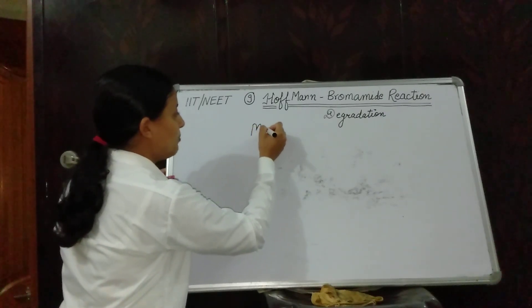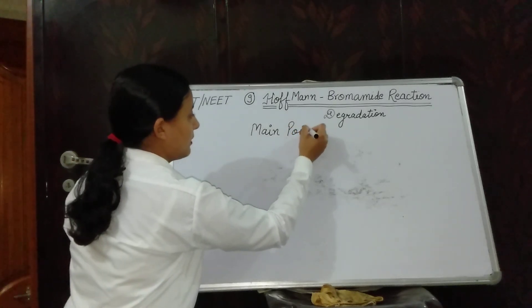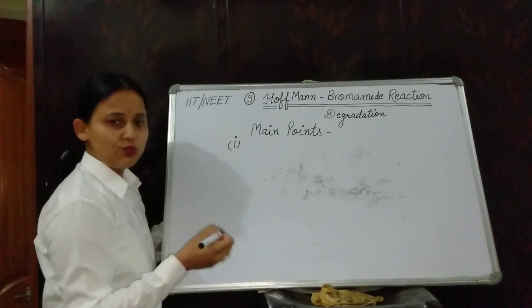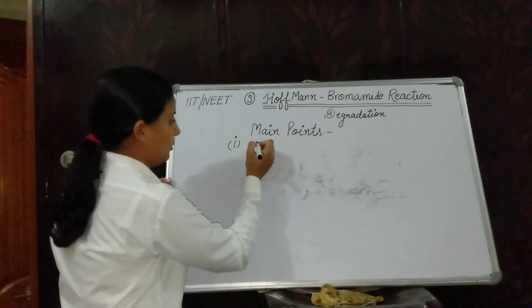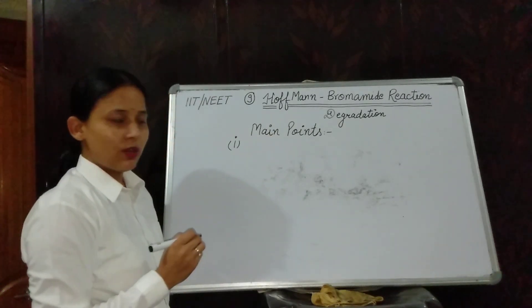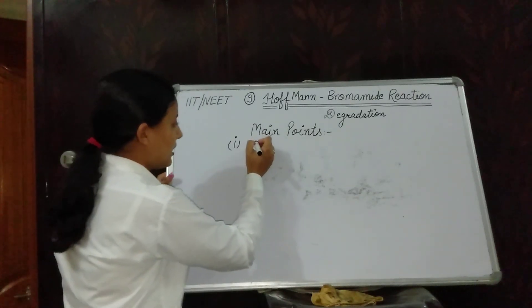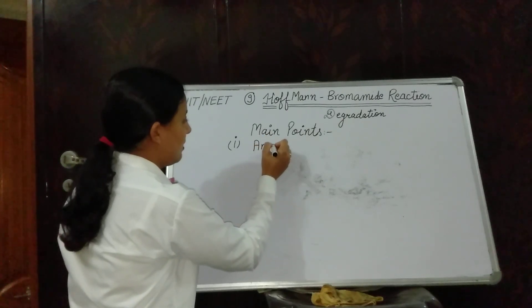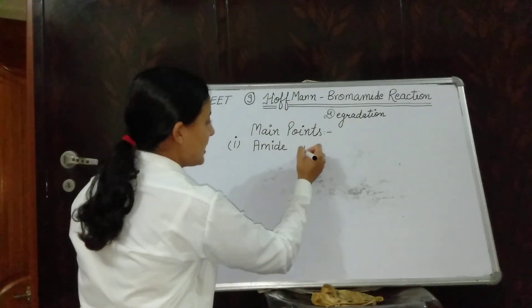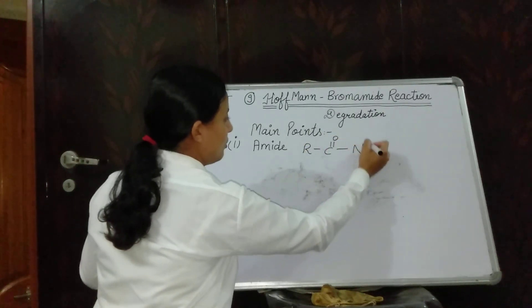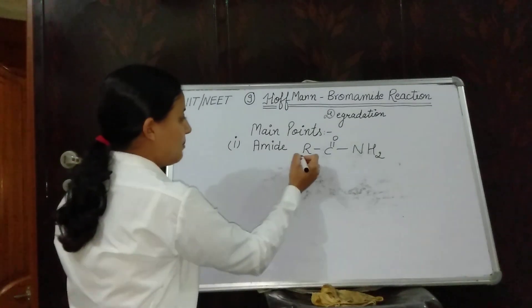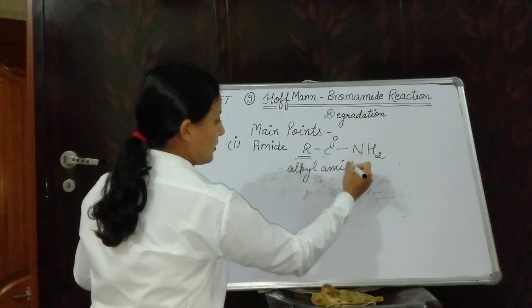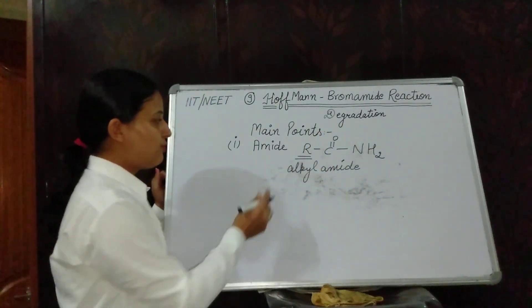First we see the main points of the reaction. In the very first main point, we see what is our reactant molecule. Focus in this reaction on both the reactant molecule and the product molecule. The reactant molecule in this reaction will be Amide — you can write this as R-CO-NH₂, that is alkylamide.